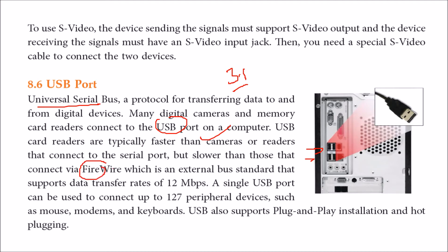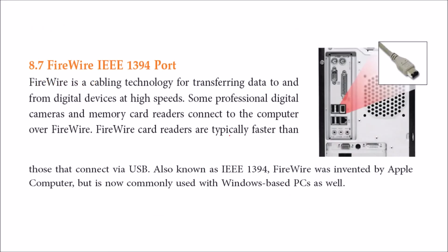There is also Firewire, which is quite fast. A single USB port can connect up to 127 peripheral devices — such as a mouse, modem, keyboard, and more. Importantly, previously — about 10 to 15 years ago — you had to restart the computer when connecting a mouse or keyboard. But now, USB allows plug-and-play and hot-plugging capability: you connect a USB device and it starts immediately; you disconnect and it stops — no restart needed.